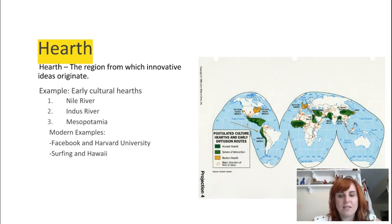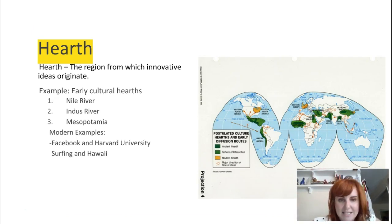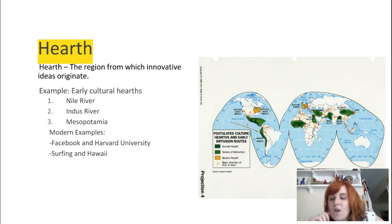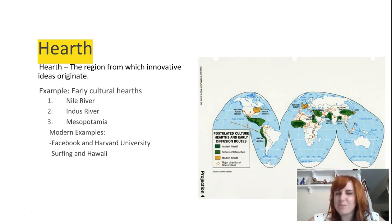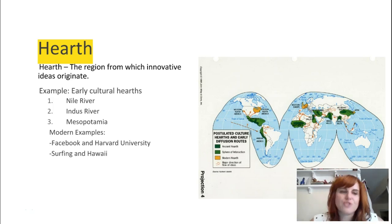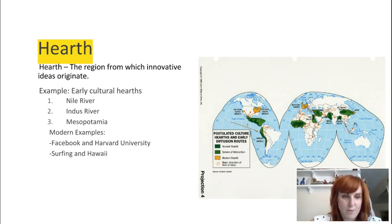A hearth is a really easy definition. It's just the original place from which something diffuses. So if a trend starts at Spanish Springs High School and then spreads throughout the country, Spanish Springs High School would be the hearth. These are examples of cultural hearths in history: the Nile River and Ancient Egypt, the Indus River, and Mesopotamia around Iraq and Iran, where some of the earliest civilizations spread from.